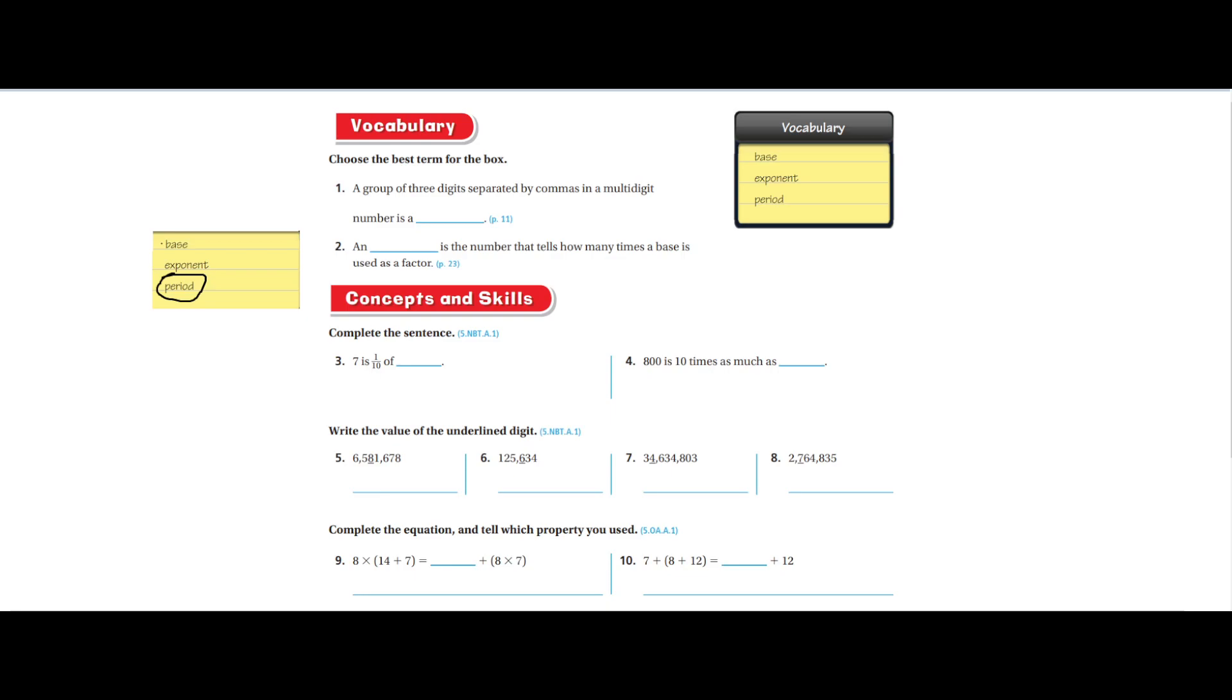Hi friends, and today in this video we're going to be doing Chapter 1 Go Math mid-chapter checkpoint. It's going to be a series of two or three videos, so let's do it. A group of three digits separated by commas in a multi-digit number is a period.